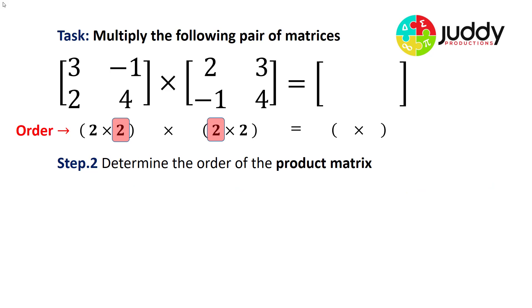A step that many people like to undertake is to determine the order of the product matrix and that's simple as well. To determine the order of the product matrix, simply allocate the row number of the first matrix to the row number of the product matrix and the column number of the second matrix to the column number of the product matrix.